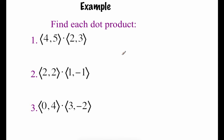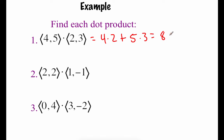We've got a few examples to look at with the dot product. First, we're going to take the vector (4, 5) and do the dot product with the vector (2, 3). We look at the x-values: 4 times 2, then add 5 times 3. Four times 2 is 8, five times 3 is 15, and if we add those together we get 23.